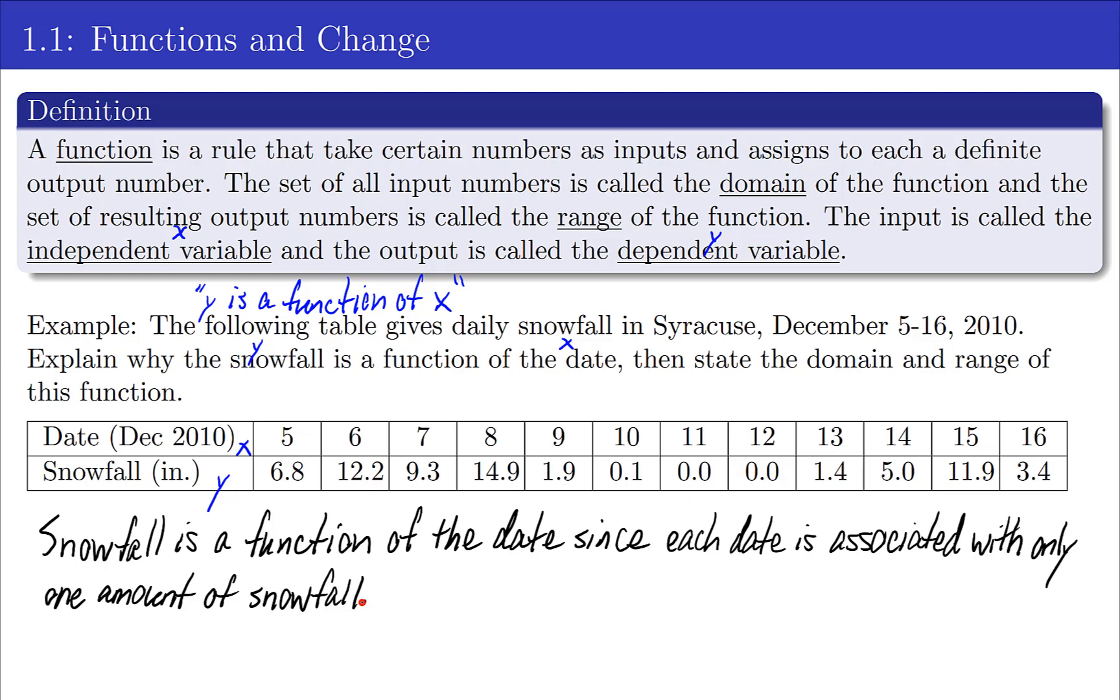With that said, snowfall is a function of the date since each date is associated with only one amount of snowfall. Now the question also asks for the domain and range. For the domain we often use these curly brackets to describe a set. The domain is all the values that x can take, or at least you can think of it as the input.